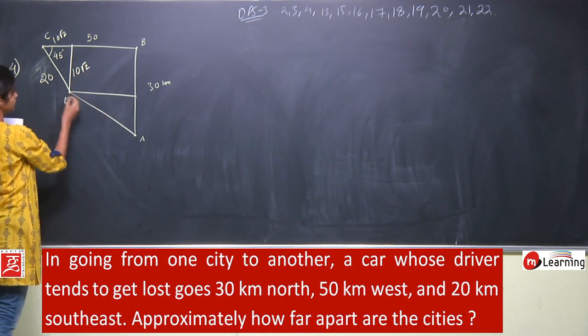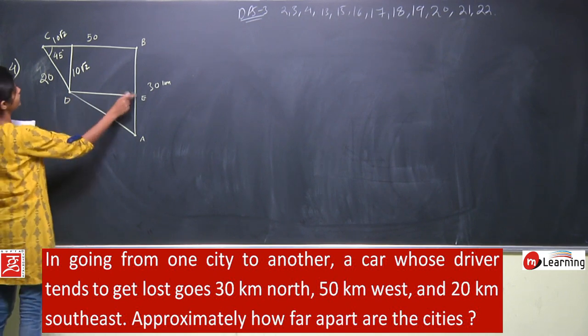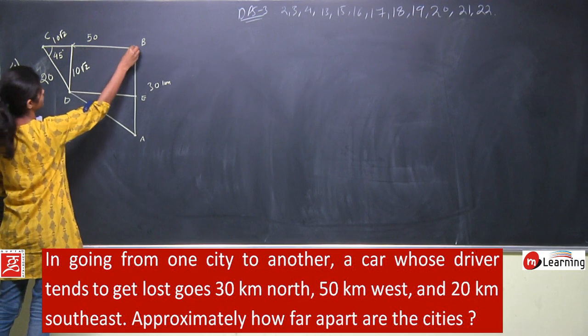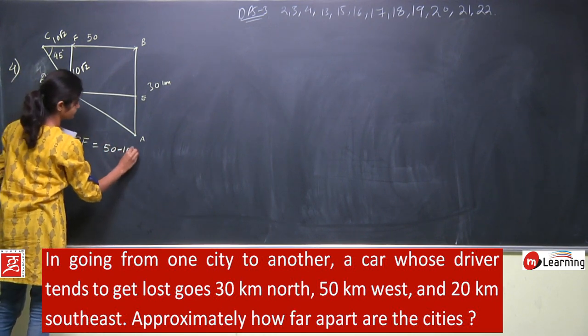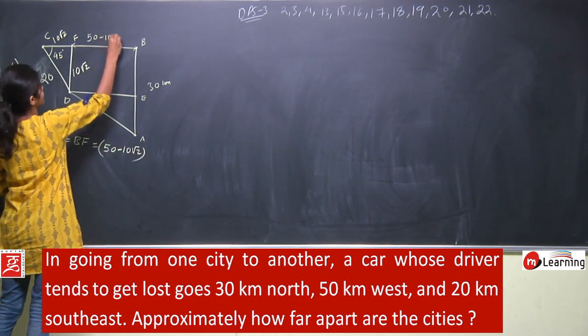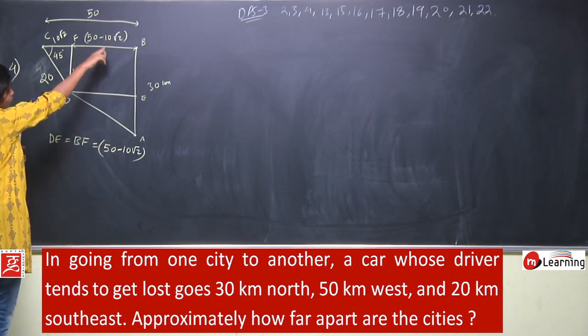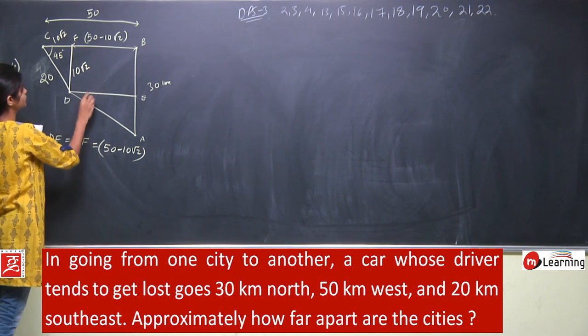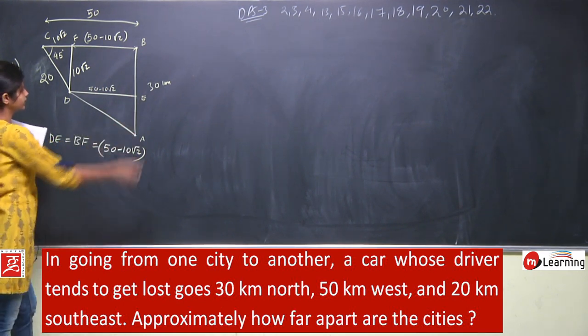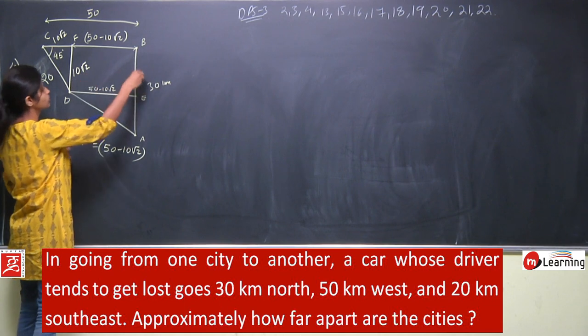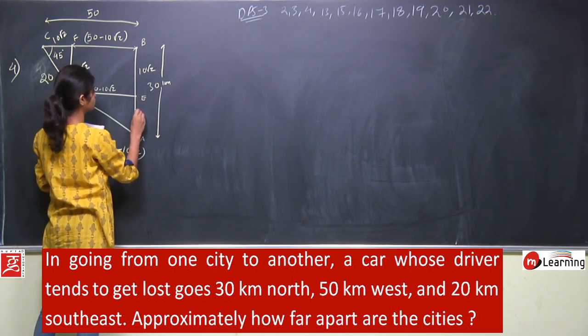So this distance, suppose this is E, de will be equal to this distance, which equals BF that is 50 minus 10 root 2. The total distance here is 50, so this will be 50 minus 10 root 2. This is a rectangle, so opposite sides are equal, so this is also 50 minus 10 root 2. And this distance E to A: this whole segment is 30 and this distance is 10 root 2, so this distance is also 10 root 2. So this total distance AE will be equal to 30 minus 10 root 2.